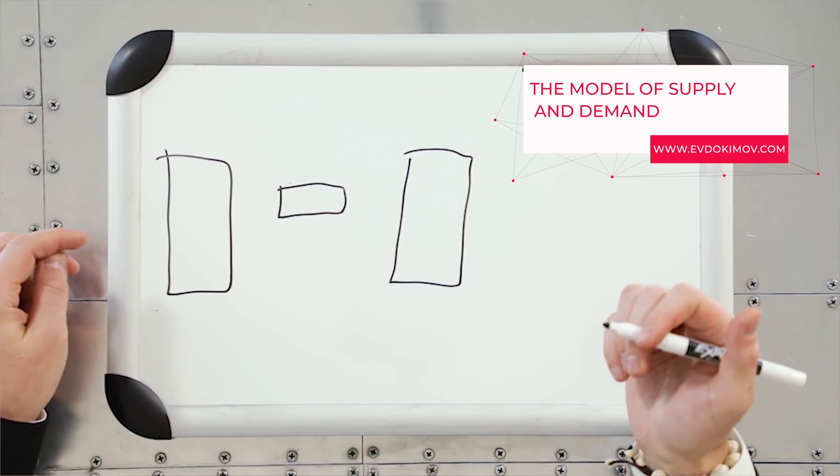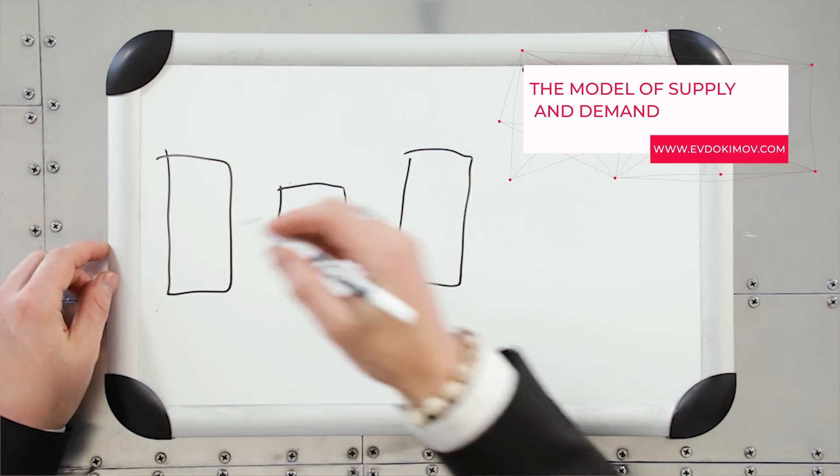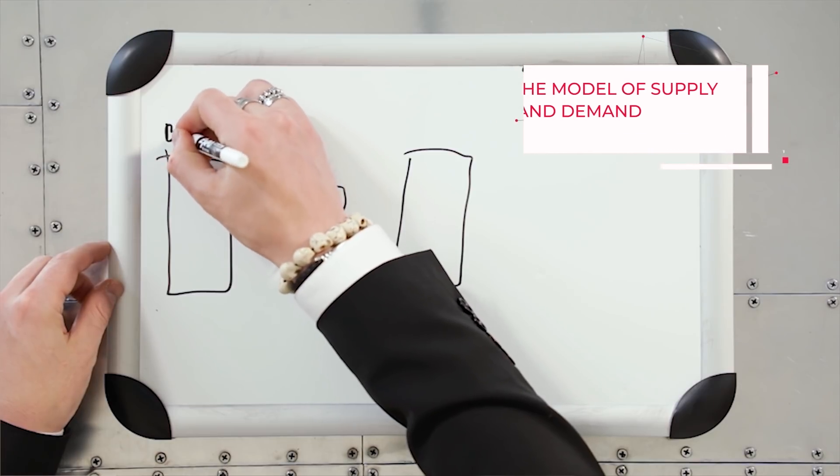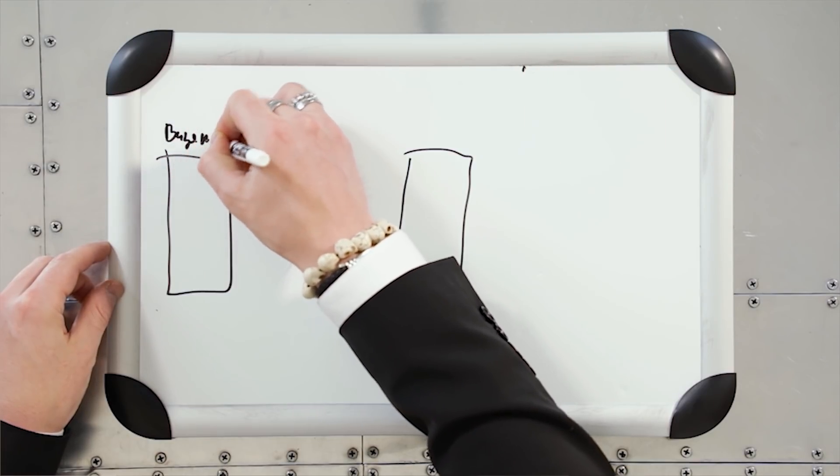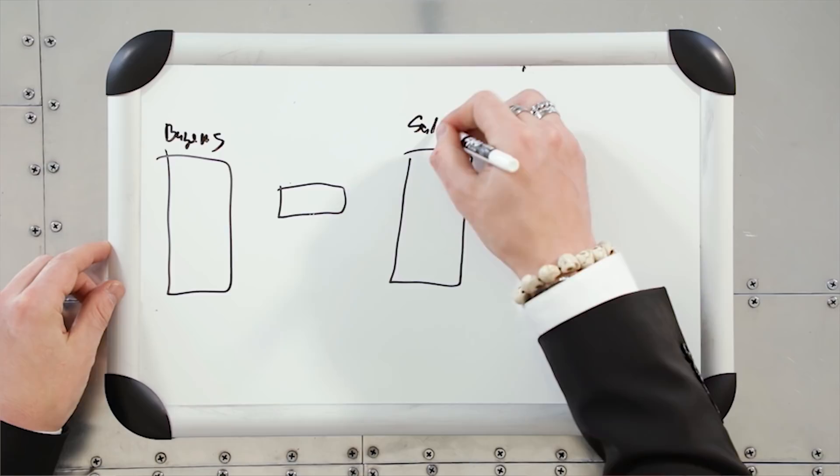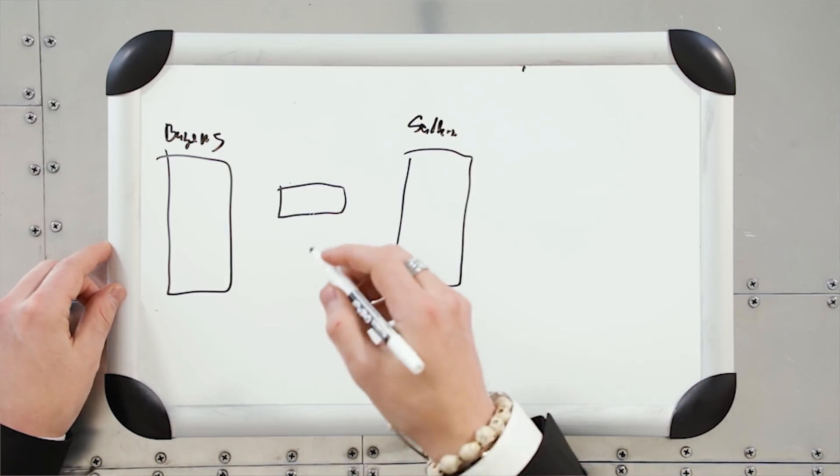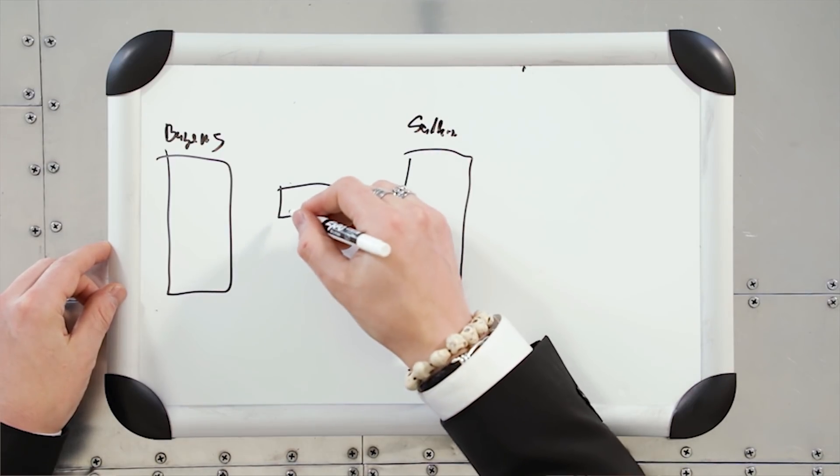Now, I will do my best to draw a model of how this works. Here, we will label our buyers, and here are the sellers. We have the price of the crops, and the price of the crops is always measured in liquid currency, whether it is in dollars, Bitcoin, Litecoin, or Ethereum.